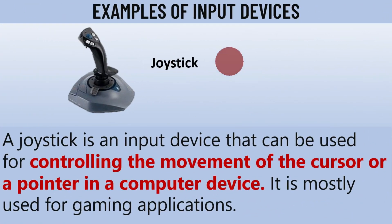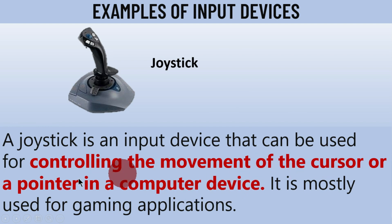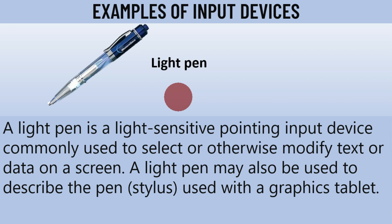The next example is the joystick, which is similar to the computer mouse in that it serves as a pointer. It is used for controlling the movement of the cursor or a pointer in the computer device. It is mostly used for gaming applications — its main purpose is for gaming, and you can use the joystick to play games on the computer screen as well as to control the cursor in the computer system.